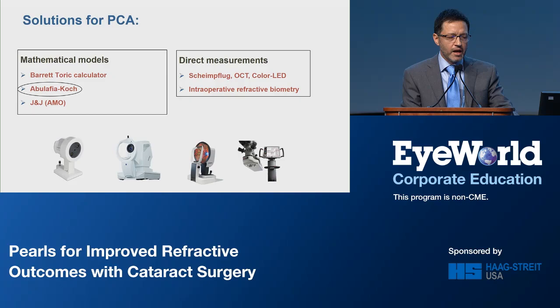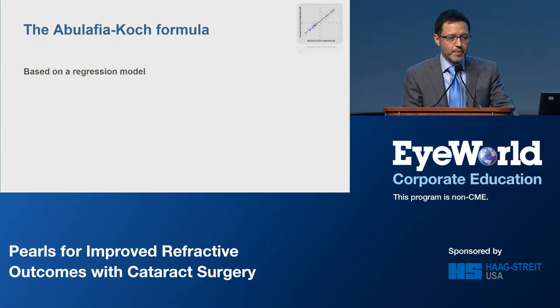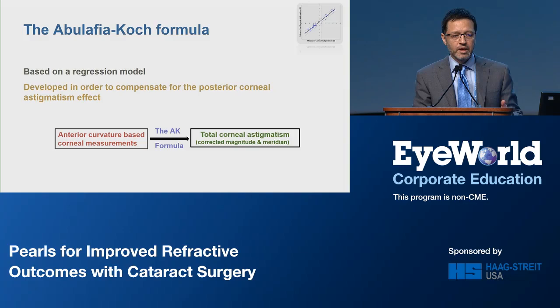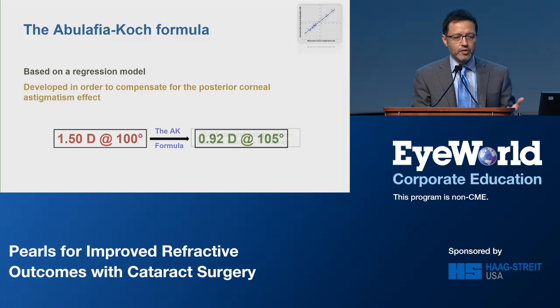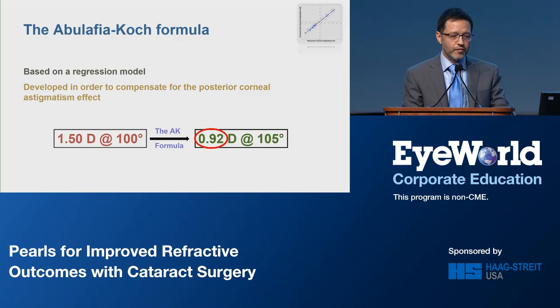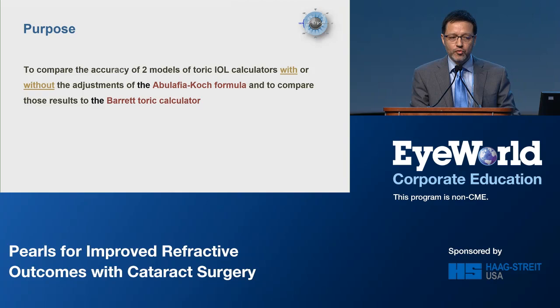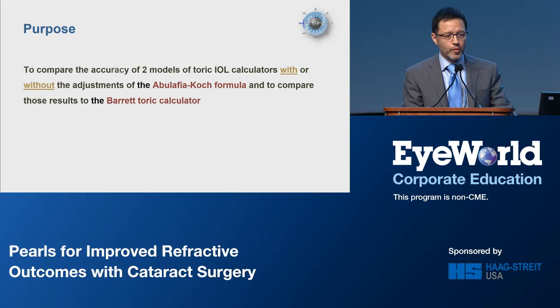Today I would like to focus on the Abulafia-Koch formula. This formula is based on a regression model and was developed to compensate for the posterior corneal astigmatism effect. It takes anterior curvature-based corneal measurements and calculates a new total corneal astigmatism with a new magnitude and a new meridian. For example, if we take 1.5 diopters at 100 degrees, it will transform that into 0.92 at 105 degrees. We published a paper about this formula approximately three years ago, comparing the accuracy of two models of Toric calculators with or without the adjustments of the Abulafia-Koch formula, and comparing those results to the Barrett Toric calculator.